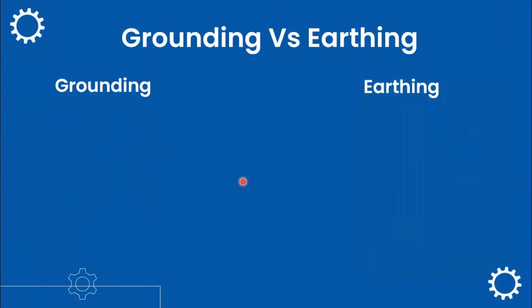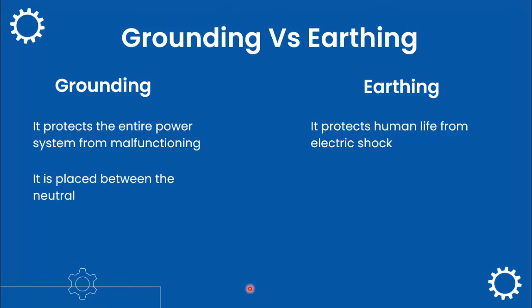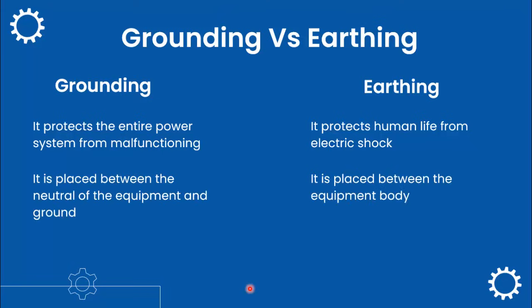Now let's quickly see their differences. Grounding protects the entire power system from malfunctioning, whereas earthing protects humans from electric shock. In grounding, the neutral point and earth are connected, whereas in earthing, the equipment body and earth are connected.